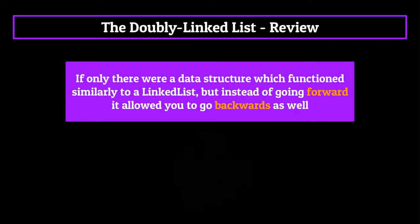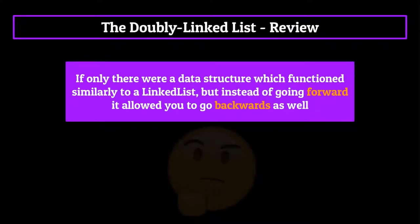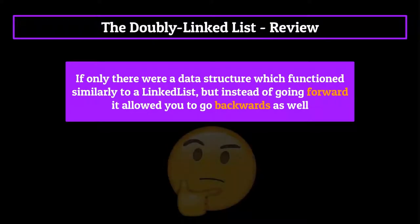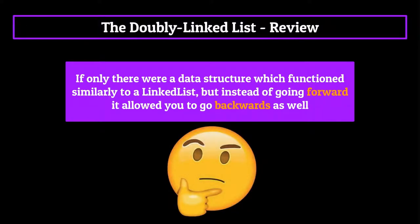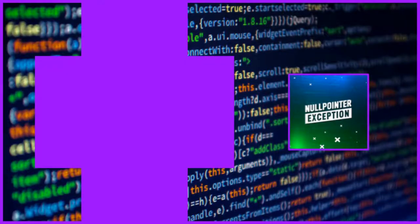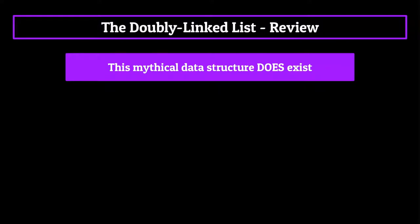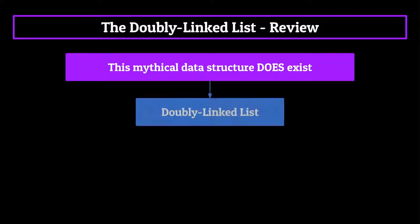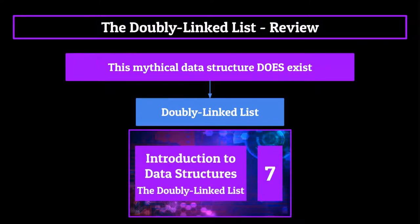Now if only there was a data structure which functioned similarly to a linked list, but instead of going forward it allowed you to go backwards as well. That would be outstanding. Oh well, maybe in the future. That's all for today guys, thanks for watching — I'm joking of course. This mythical data structure does exist and it's known as the doubly linked list, which coincidentally is the title of this video.